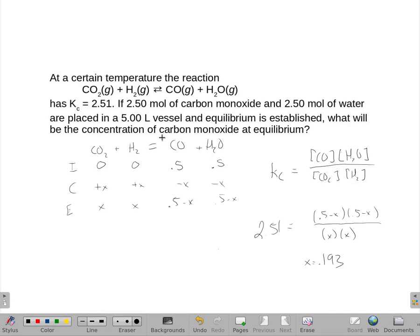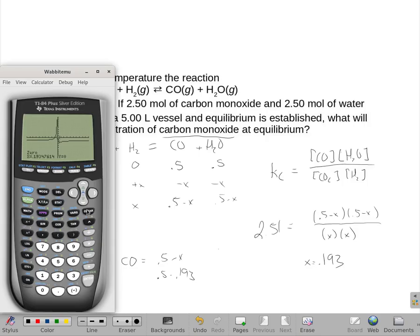Alright, everybody wants to know what the carbon monoxide concentration is. So carbon monoxide, which is 0.5 minus x would be 0.5 minus 0.193. So 0.5 minus 0.193 would get an answer of 0.307.